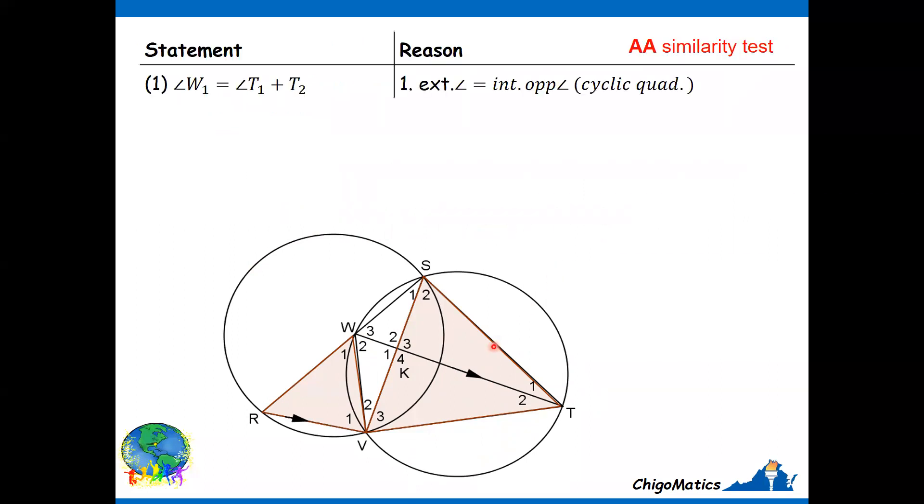Therefore, as our starting point, we are simply saying because we are told that we have a cyclic quad, the theorem we can easily identify is the one we have angle W1, this angle, this exterior angle.